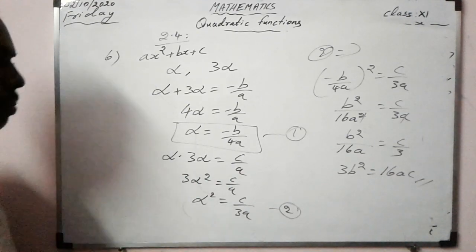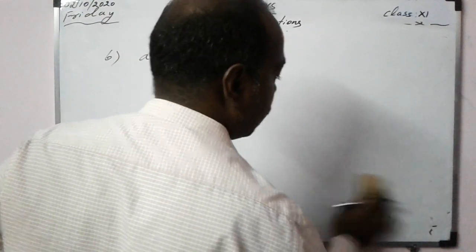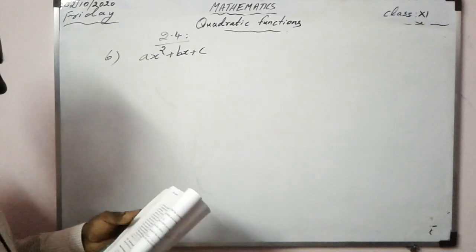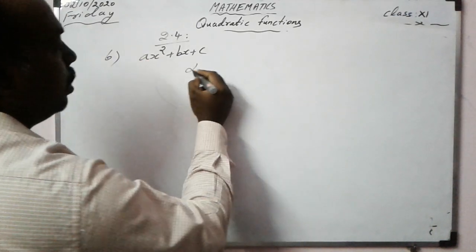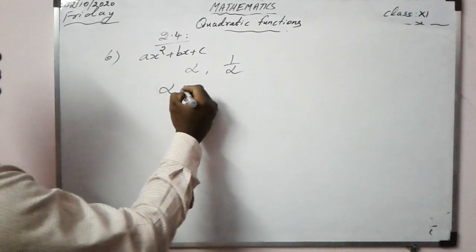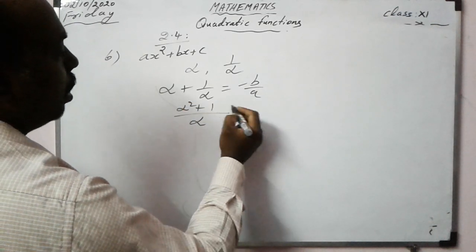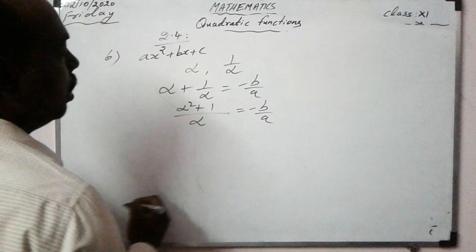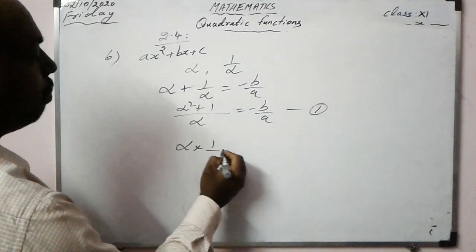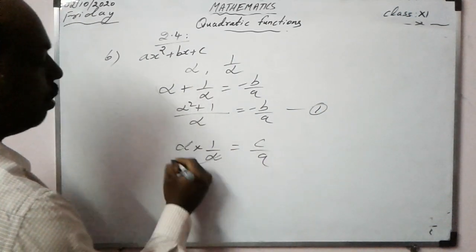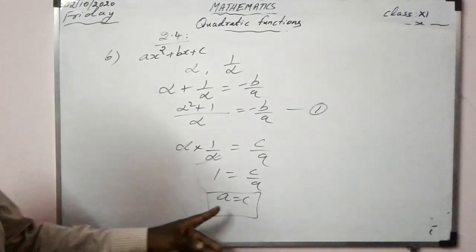Simplifying b²/(16a²) = c/(3a): cancelling one factor of a gives b²/(16a) = c/3, so 3b² = 16ac. That is the condition. Third part: one root is the reciprocal of the other. Product: alpha × (1/alpha) = c/a, so 1 = c/a, giving a = c. That is the condition.